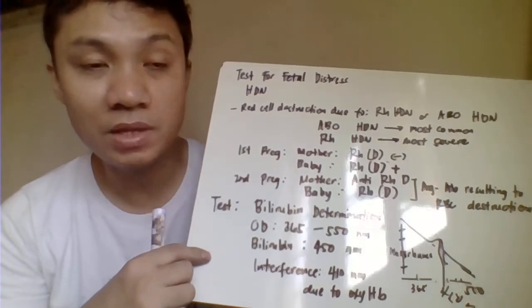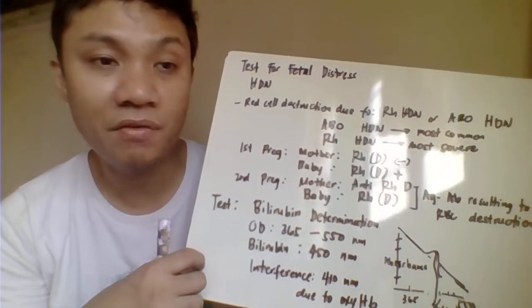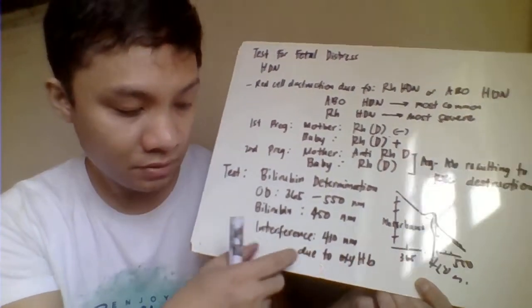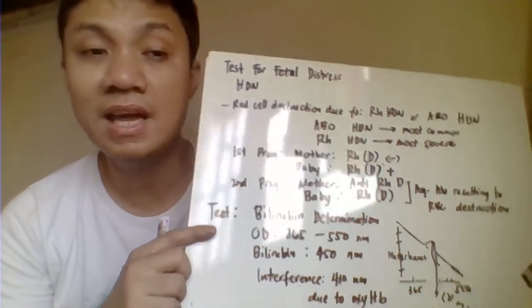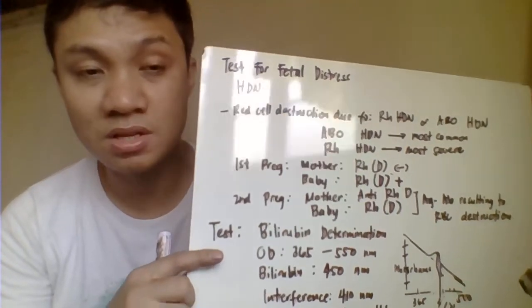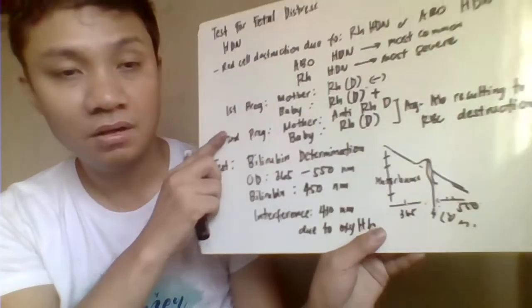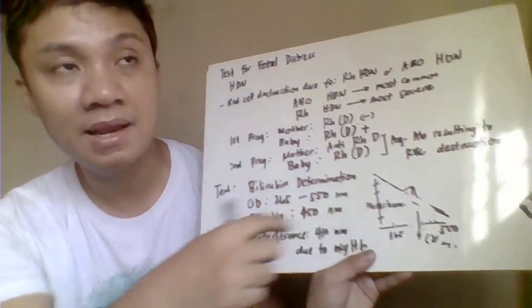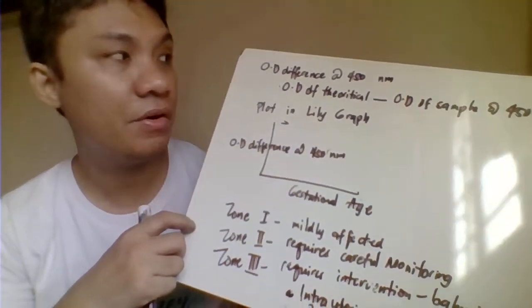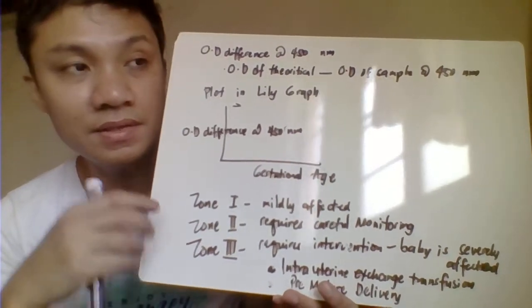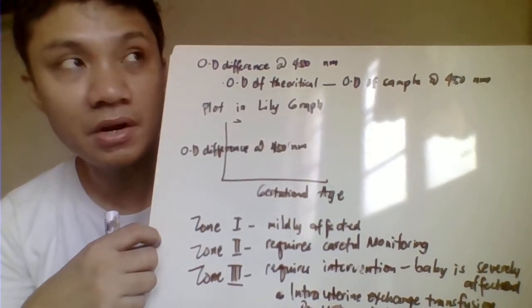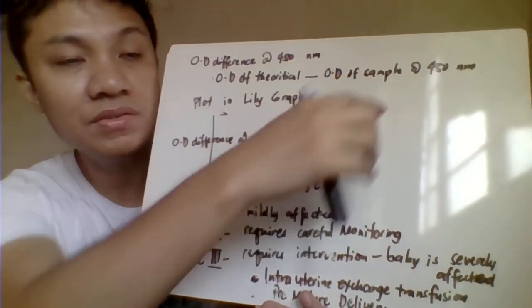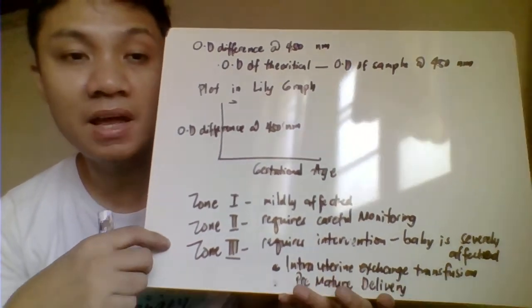There can be interference in this test if the specimen is contaminated with blood, because oxyhemoglobin has an absorbance reading at around 410 nm, which is close to 450 nm. If blood contaminates the specimen, the absorbance reading increases — giving a false positive result, since we are only after the bilirubin concentration. To address this, you measure the absorbance reading and take the difference between your specimen reading and the normal baseline — this is called the OD difference at 450 nm wavelength.